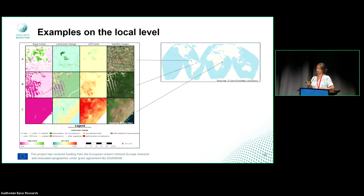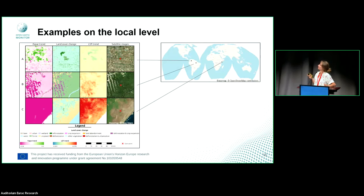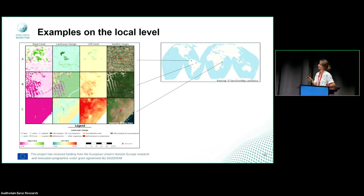We also look at those same examples in terms of trend, along with the land cover change map. For the reforestation project, there's a positive trend, and the land cover maps picked that up. We also show the land surface temperature from MODIS — as expected, land surface temperature goes down with reforestation. The vice versa holds for deforestation, where we see an increase in land surface temperature. These combinations allow us to look at where there is land cover change and corresponding increases or decreases in land surface temperature.